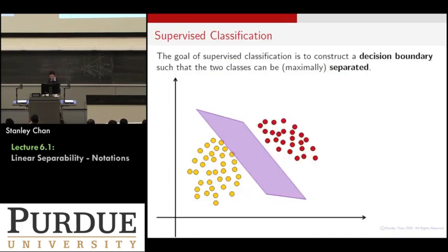All right. So, supervised classification. The problem is very simple. Let's imagine that you have two classes of data points. One is marked by yellow dots, the other one is marked by the red dots. I want you to build a classifier, meaning that I want to find a plane, because now I'm working on a linear classifier situation. I want to find a plane that can separate the two classes. So, that's the goal. So, I call the plane as my decision boundary.